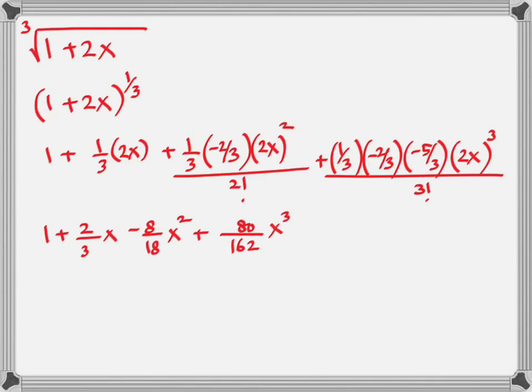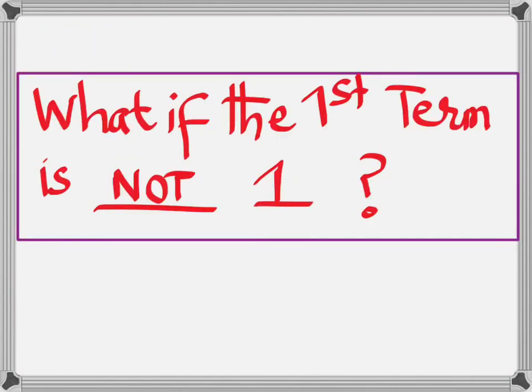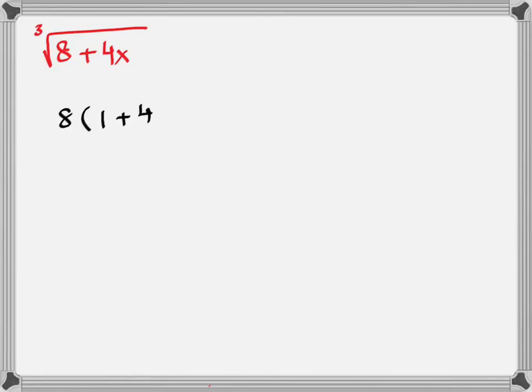Now, in all these examples, I hope you have observed that the first term was 1. Is there a possibility that the first term is not 1? Definitely, there is a possibility. Now, what do you think you should do? The word common appears somewhere. (8 + 4x)^(1/3). This time, take that 8 common out, because you want the first term, the constant term, to be 1. Now, remember, this power of 1/3 is applicable on 8 + 4x. So, when you take common, that 1/3 applies to the 8 as well as to the bracket. Cube root of 8 is 2. (1 + (1/2)x)^(1/3).